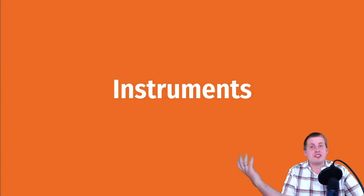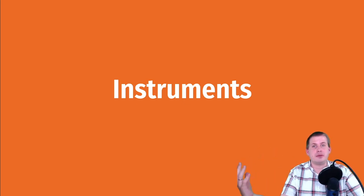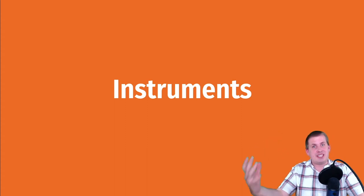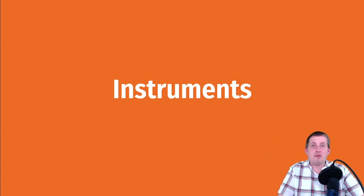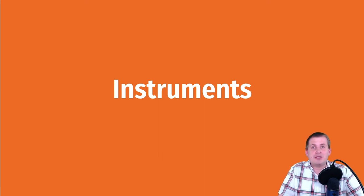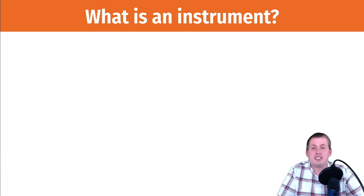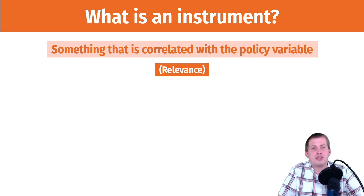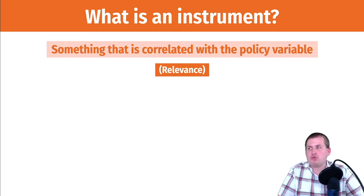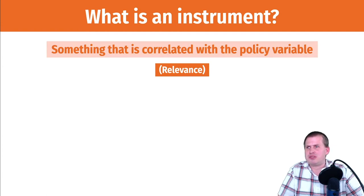As we saw in the previous section, an instrument is something that lets us split our policy variable into its exogenous part and its endogenous part, so that we can get rid of the endogeneity and we're left with just the as-if-random exogeneity, and then we can talk about causal effects. An instrument is something you can measure in the world, but it has to meet specific criteria. The first is that it has to be correlated with the policy variable — in the case of education, it has to be something that causes education, such as required schooling laws, how close you live to a school, or ability to get to school. Another term for this is relevance.